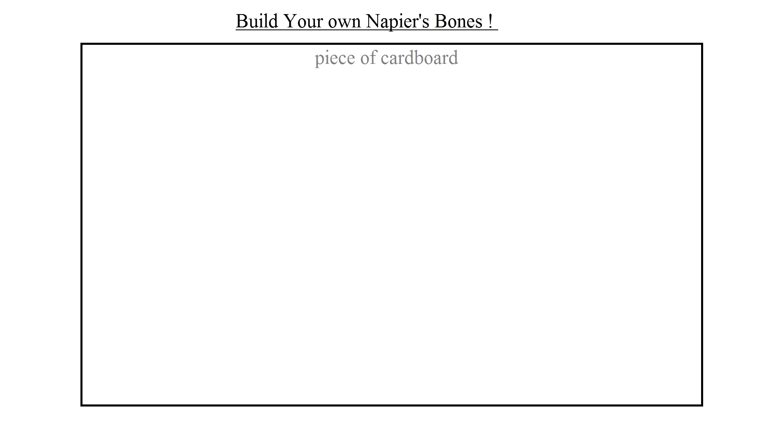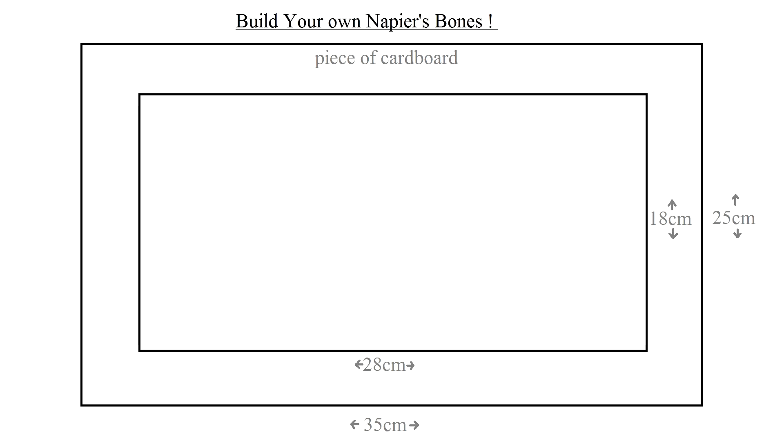You cut out a piece of cardboard from the box. I used a piece with 35cm x 25cm. You can use any size, but this one works well for me. On the cardboard you draw a rectangle with a height that can easily be divided by 9. I choose 18cm of height and 28cm of width, since it is a multiple of 2.